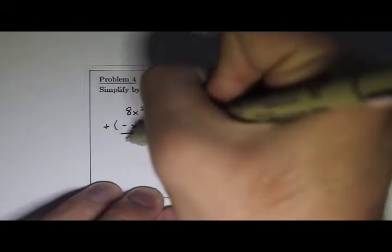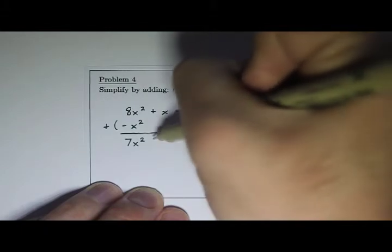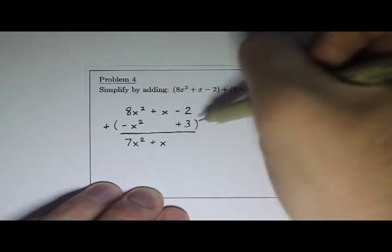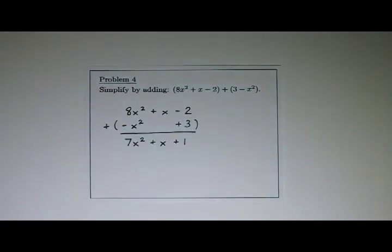Eight minus one is seven, 7x². And then I just have one x here. And then -2 + 3 is +1. So there's my answer, 7x² + x + 1.